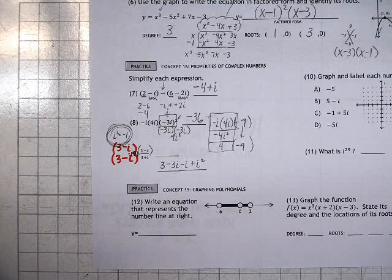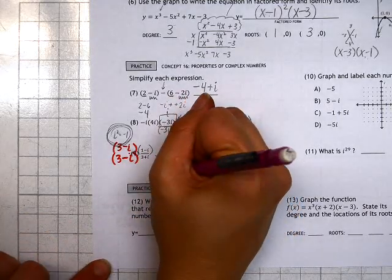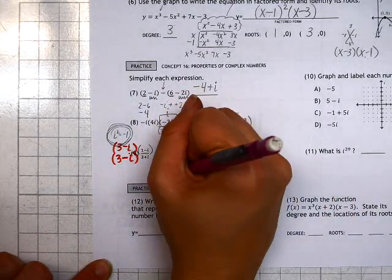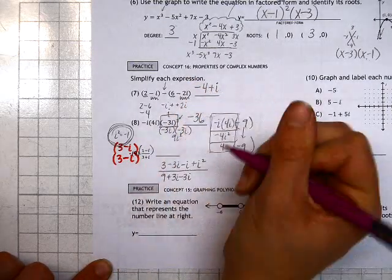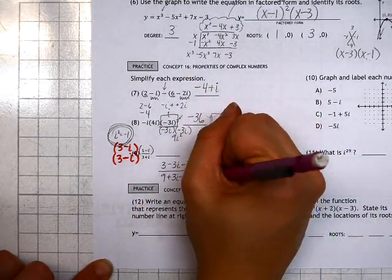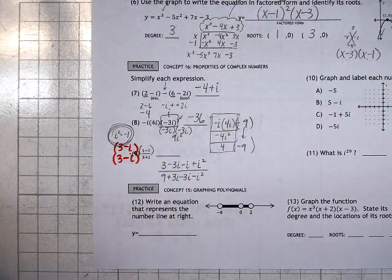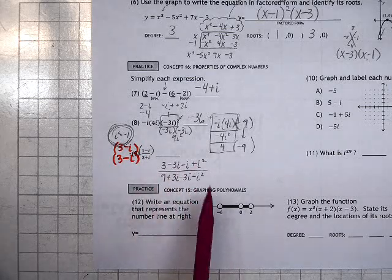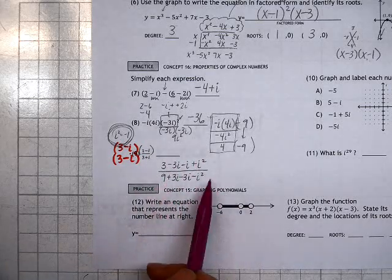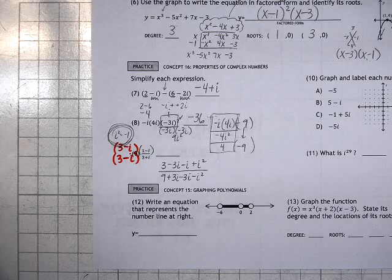We're going to FOIL also on the bottom. 3 times 3 is 9, 3 times i is positive 3i, negative i times 3 is negative 3i, and negative i times i is negative i squared. Now that we FOIL, we have a lot of things to simplify. We can't cross out things top and bottom, so we'll need to just look on the top and look at the bottom and see if we can combine like terms.